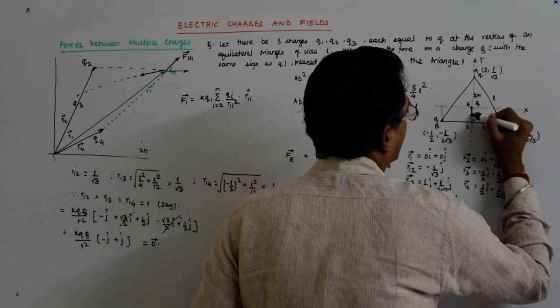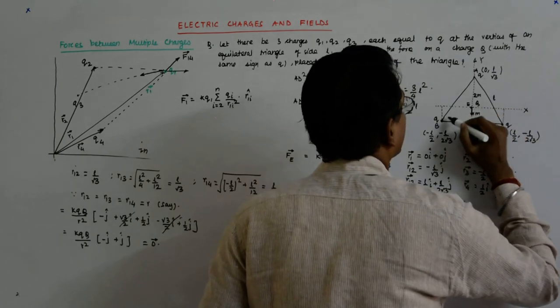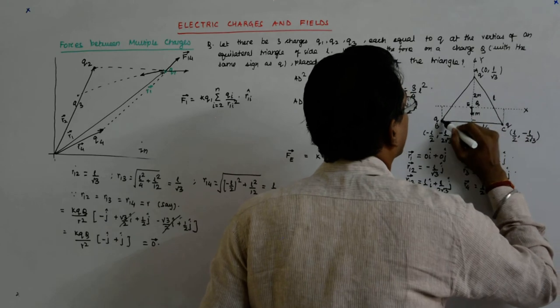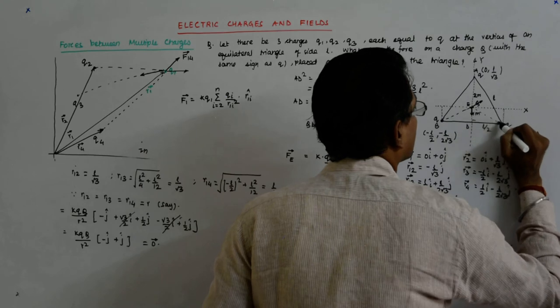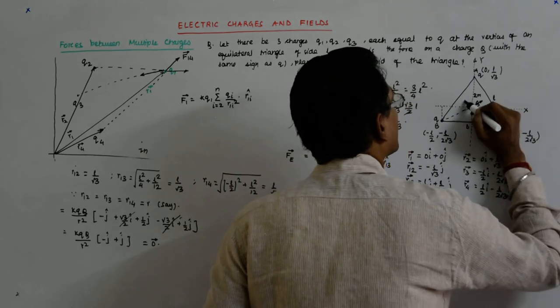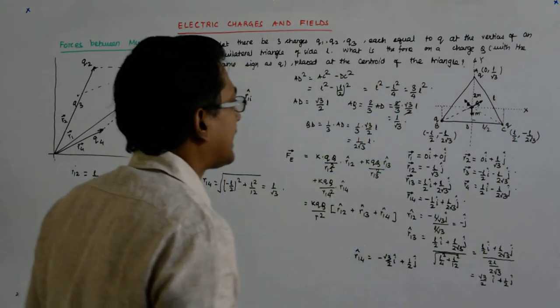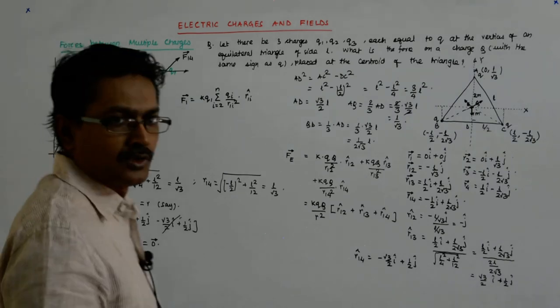So if it is something like this and this is the force here and this is the force here and this is the force here, then the net force on this is equal to 0.